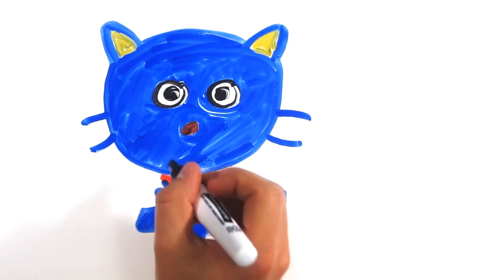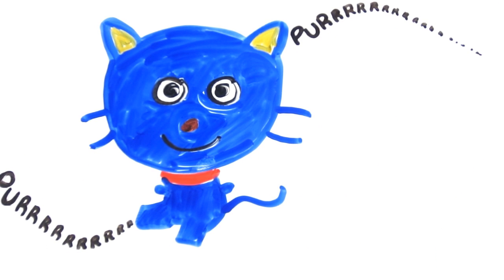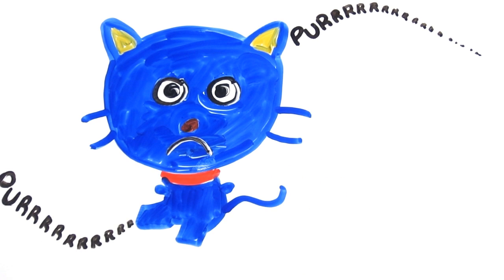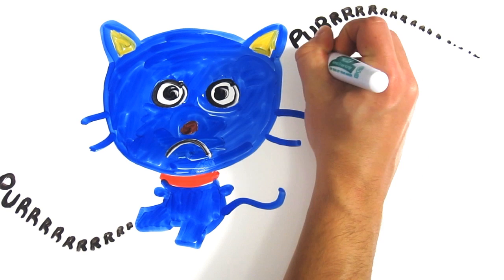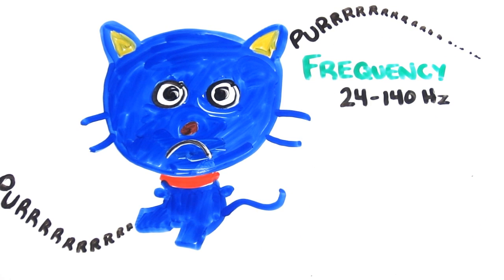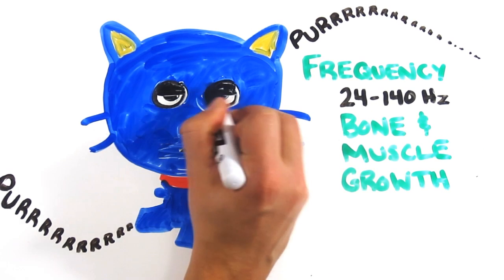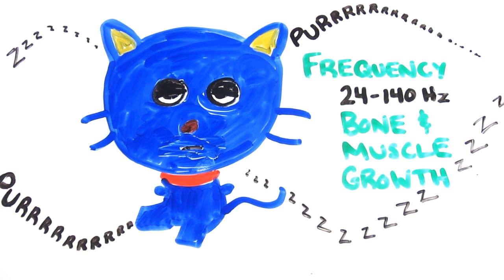Interestingly, we still don't really know why cats purr. In fact, cats purr both during pleasurable situations, but also while they're in duress or injured. While many believe it's a means to communicate passivity or pleasure, one interesting theory suggests that the frequency that purrs occur at, 24 to 140 hertz, promotes healthy bone growth and healing. Because cats have adapted to a lifestyle with frequent rest and sleep, this may be a low-energy mechanism to promote muscle and bone health.